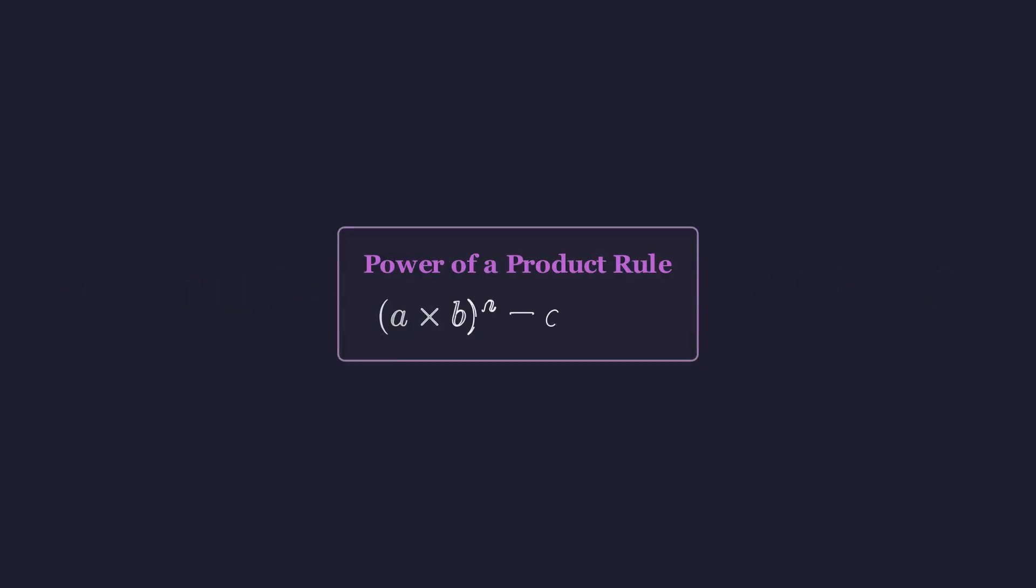Now, to make progress, I need to remind you of one of the fundamental rules of exponents, the power of a product rule. When you have something like a times b, all raised to the nth power, that's the same as a to the n times b to the n. This rule is going to be essential for what comes next.